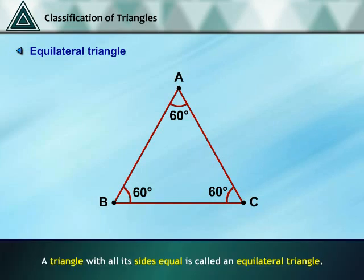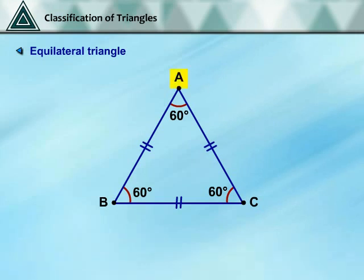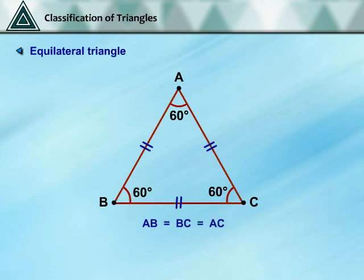Equilateral Triangle: a triangle with all its sides equal is called an Equilateral Triangle. In the given figure, ABC is an Equilateral Triangle as side AB equals side BC equals side AC. In an Equilateral Triangle, all three angles are also equal — that is, Angle ABC equals Angle BCA equals Angle CAB, and each angle equals 60 degrees.